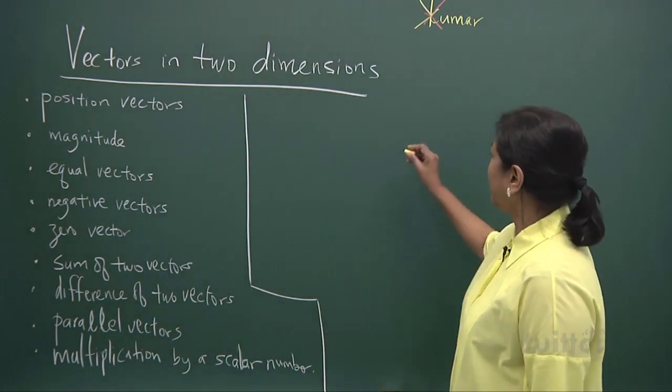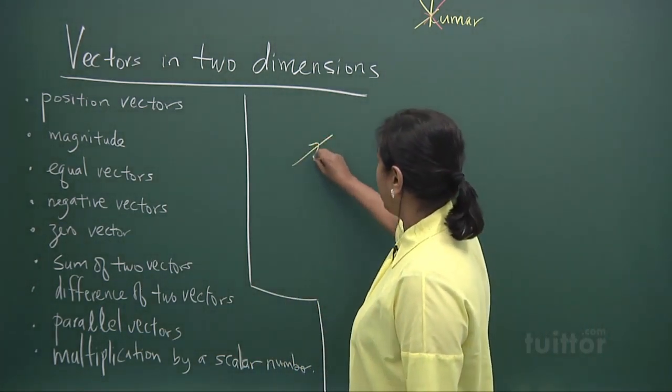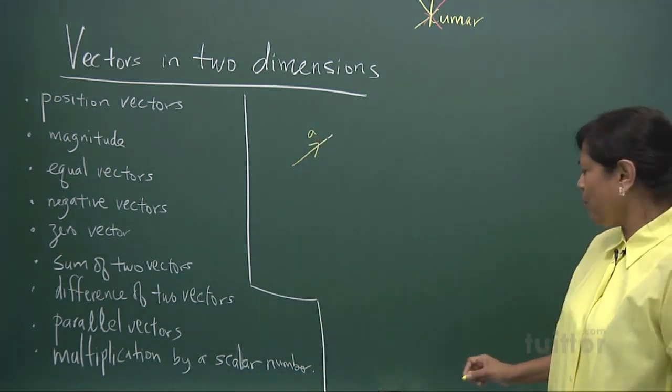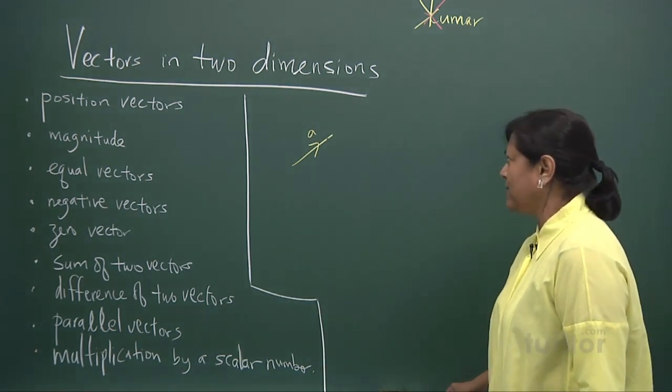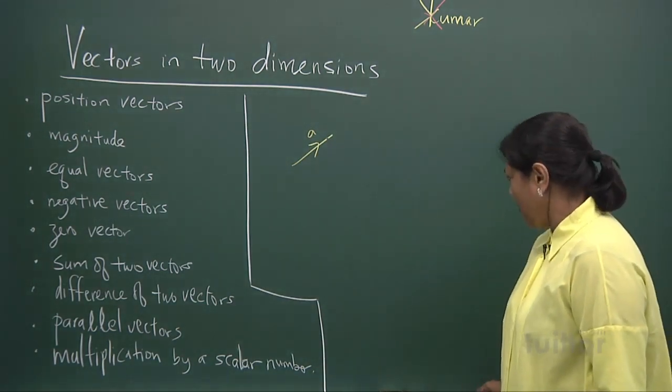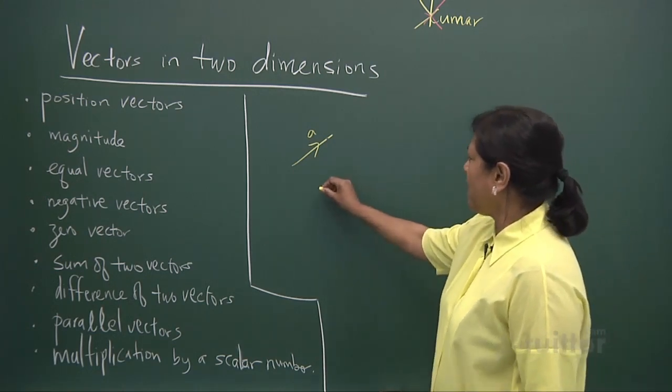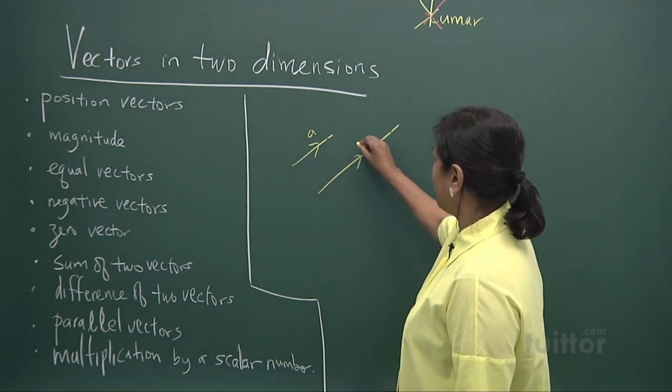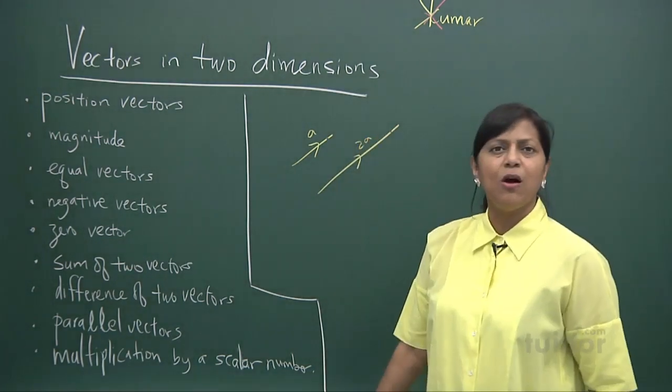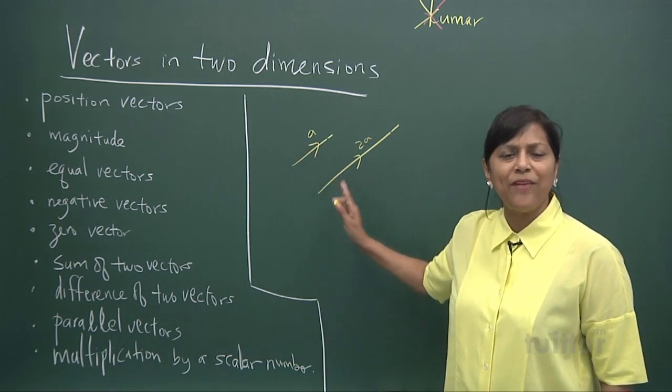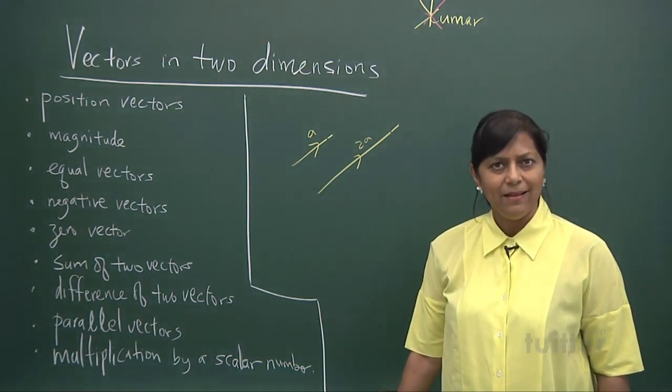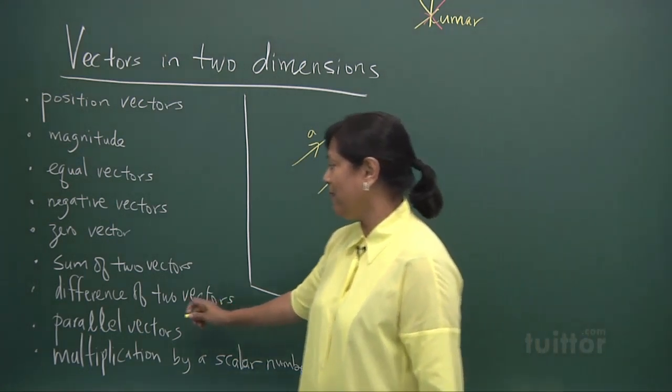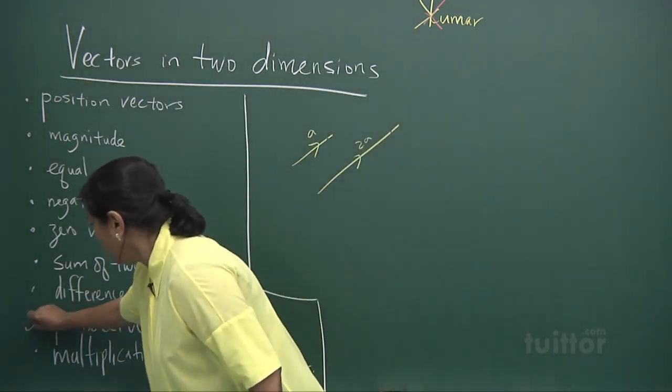Now vectors. If I draw a direction of a vector this way, this is vector a. And if I want a vector 2a, it will be a length which is double of this. I'm just doing an approximation. That's called 2a. And these two vectors are parallel. They're going the same direction. So that's parallel vector.